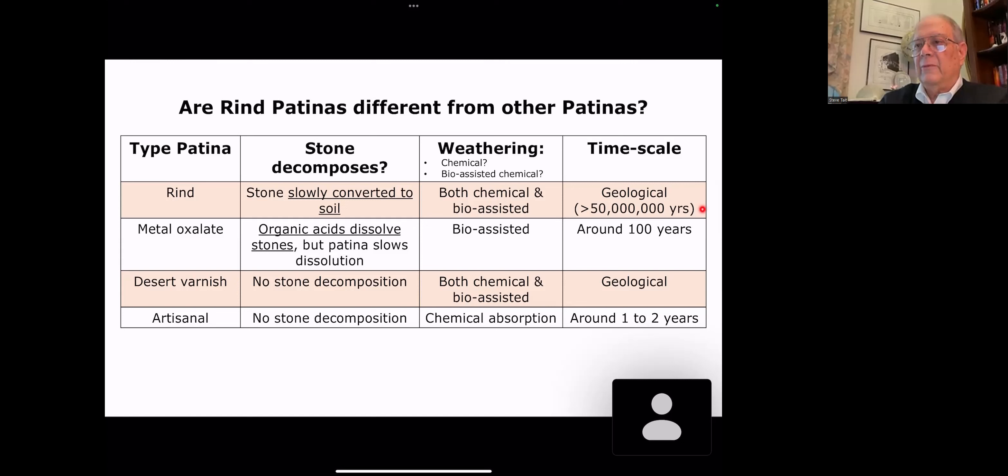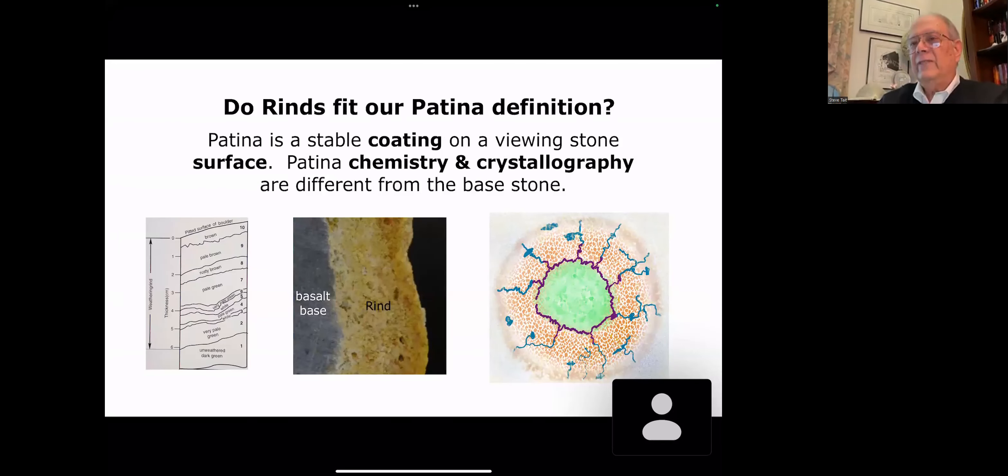Timescale, geological. We had a question last night. What is geological time? It's a really good question. I looked it up in the definition. Basically the definition says it's arbitrary. Sue and I had a lively discussion this morning, and we decided we'd use the age of the Grand Canyon as just kind of a metric for what geological time is. It's greater than 50 million years, but they can range from metal oxalate around a hundred years to one to two years for artisanal. Do rinds fit our patina definition? Patina is a stable coating on a viewing stone surface. We are looking at coatings, aren't we? Here's the stone and there's this coating with a nephrite. Basalt, here's the stone and here's its rind patina, which is a coating. And of course the model is a coating also. And the chemistry is different from the base stone.